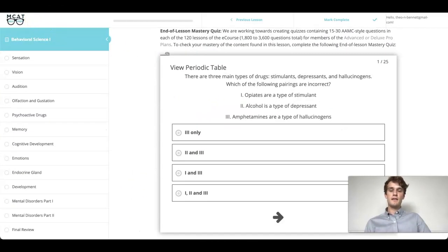Now that we understand the different classifications of drugs, we can get rid of a few of these options. We know that opiates are not stimulants. This includes heroin and other prescription opioids. Alcohol is a type of depressant. It's also a type of stimulant. And amphetamines are mostly a stimulant. They do not classify as a hallucinogen.